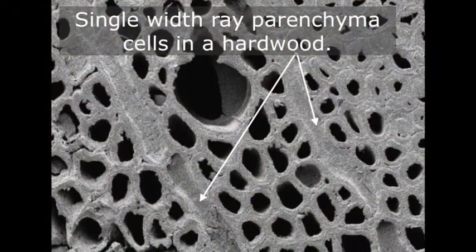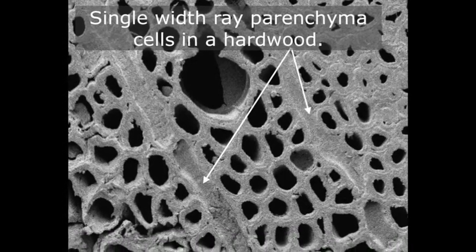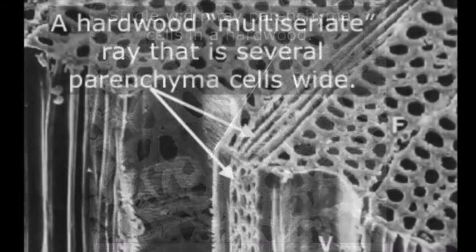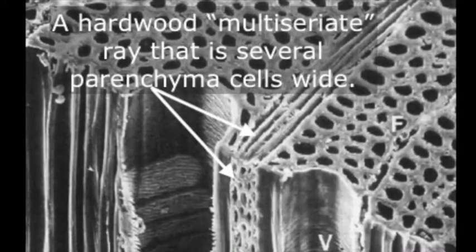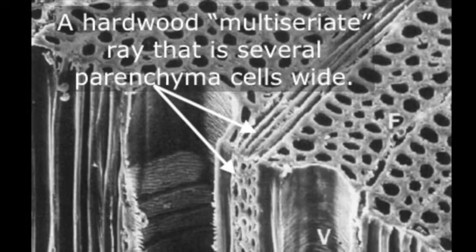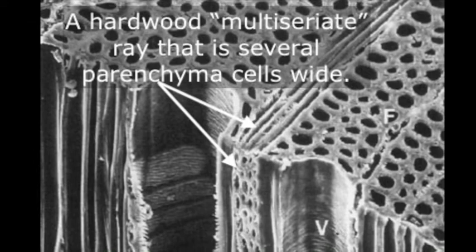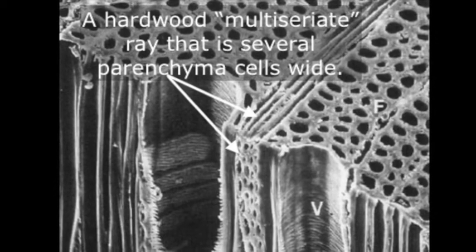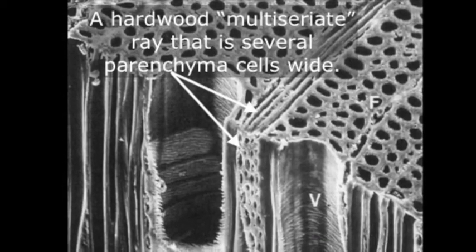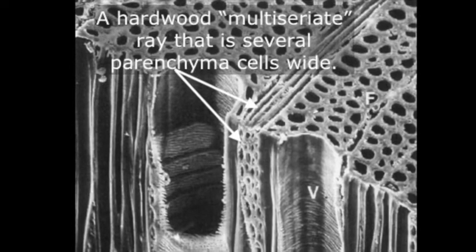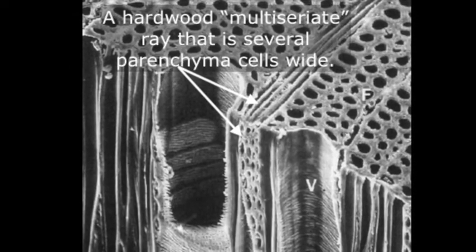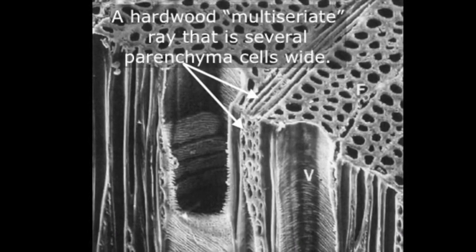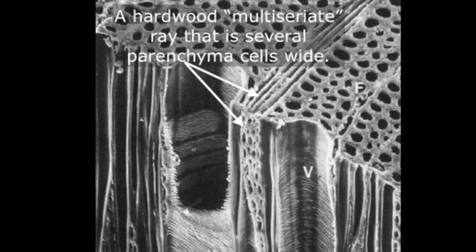Some rays in hardwoods may be only a single cell wide, but the rays in some hardwood species can also be quite wide. On a tangential surface such as this one, you can see hardwood rays that are many cells wide. These are called multi-seriate rays, and they are found, for example, in species such as oak, beech, and ash. These large multi-seriate rays provide some of the unique figure to wood at the macro level in furniture. If the wood is cut along these rays, the appearance of finished wood products can often be quite striking.